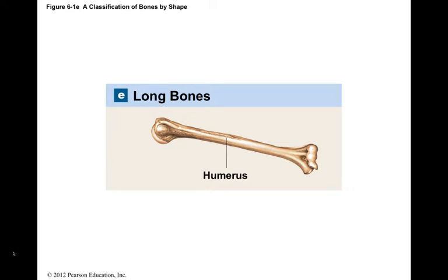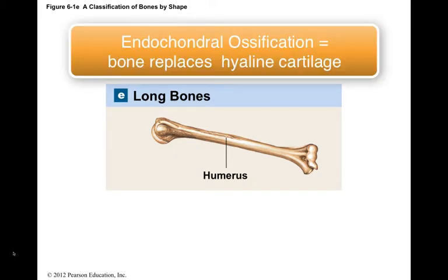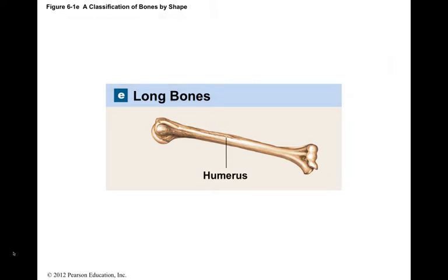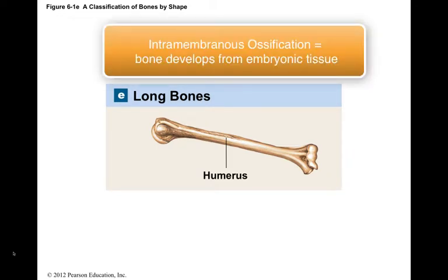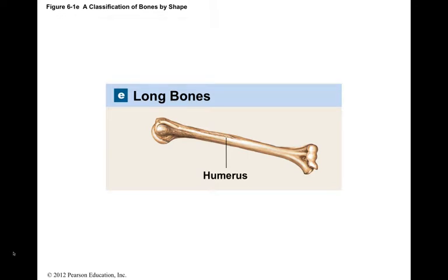Two major forms of ossification are endochondral ossification and intramembranous ossification. In endochondral ossification, bone replaces existing cartilage. In intramembranous ossification, bone develops directly from mesenchyme, which is embryonic tissue, or from a fibrous connective tissue.